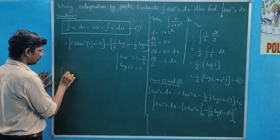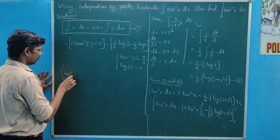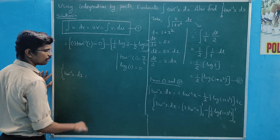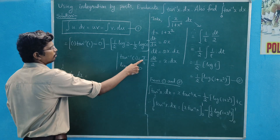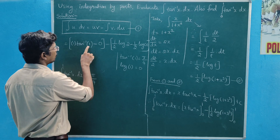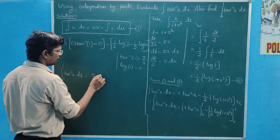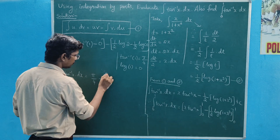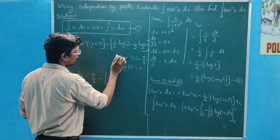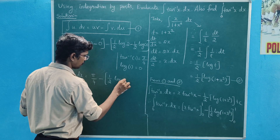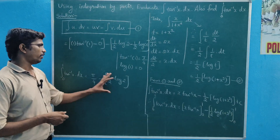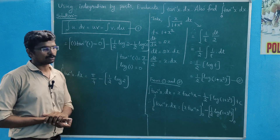Therefore, the integral from 0 to 1 of tan inverse x dx equals π by 4, then π by 4 minus 1 by 2 log 2. So the final answer is π by 4 minus 1 by 2 log 2.